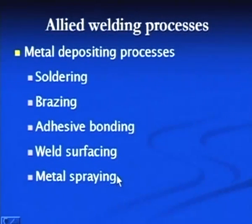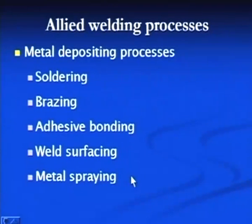Such processes are called weld surfacing processes. In metal spraying, wear resistant material in the form of either powder, filler wire, or wire is used to develop a wear resistant layer at the surface. The wear resistant material is brought to the molten state using various heat sources and that molten material is accelerated towards the surface, which after solidification develops a protective coating on the component.